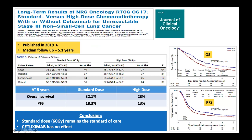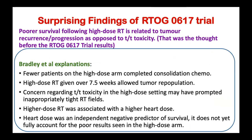The update was published four years later in 2019 in JCO, with a median follow-up of almost five years. Again, standard dose did better in terms of overall survival and progression-free survival. The conclusion remains the same: standard dose with concurrent chemo is the standard of care, and cetuximab has no effect.